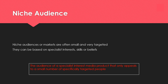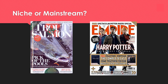A niche audience is when the audience is supposed to be small and targeted, usually based on specialist interests, skills or beliefs for a particular product. For example, a fishing magazine would be very niche because only certain people are interested in fishing. Empire magazine, however, is a much broader audience and could be described as mainstream, because the majority of people are interested in films or some sort of video entertainment.